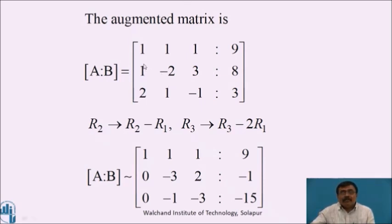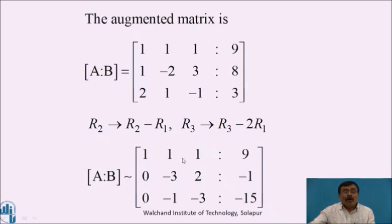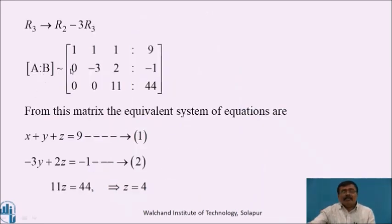Form the augmented matrix [A|b] equals: 1, 1, 1, 9; 1, minus2, 3, 8; 2, 1, minus1, 3. To make the coefficient matrix upper triangular, we make the first elements of rows 2 and 3 become zero using the first element of row 1. Applying r2 equals r2 minus r1 and r3 equals r3 minus 2 times r1, the augmented matrix becomes: 1, 1, 1, 9; 0, minus3, 2, minus1; 0, minus1, minus3, minus15. Further, applying the transformation to make the second element of row 3 zero using row 2, the augmented matrix becomes equivalent to: 1, 1, 1, 9; 0, minus3, 2, minus1; 0, 0, 11, 44.